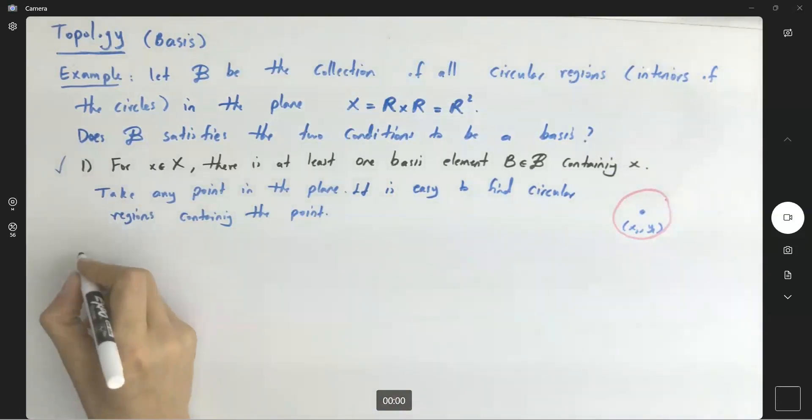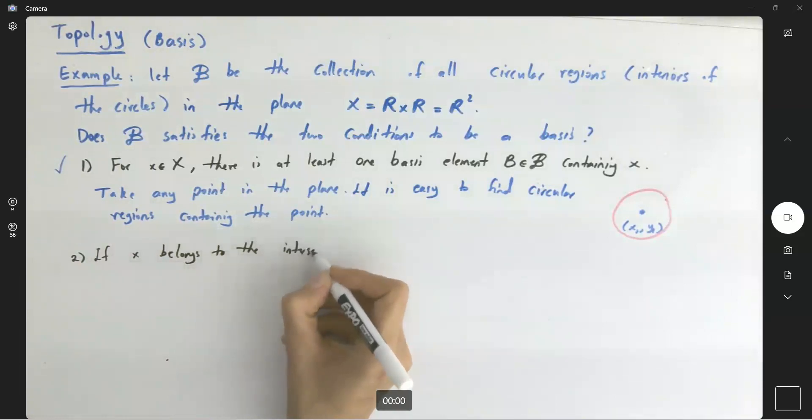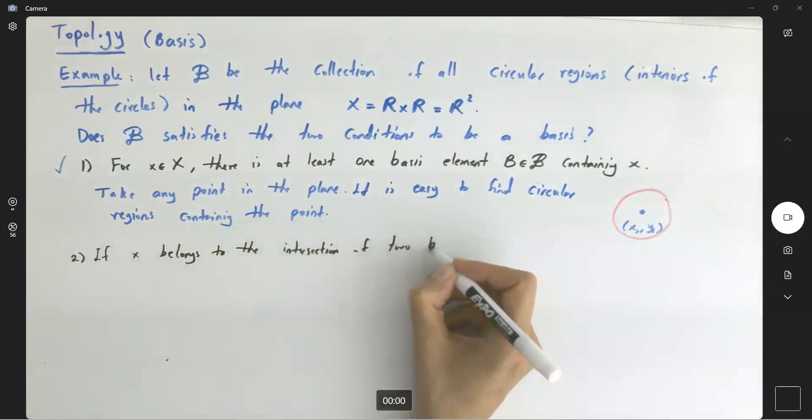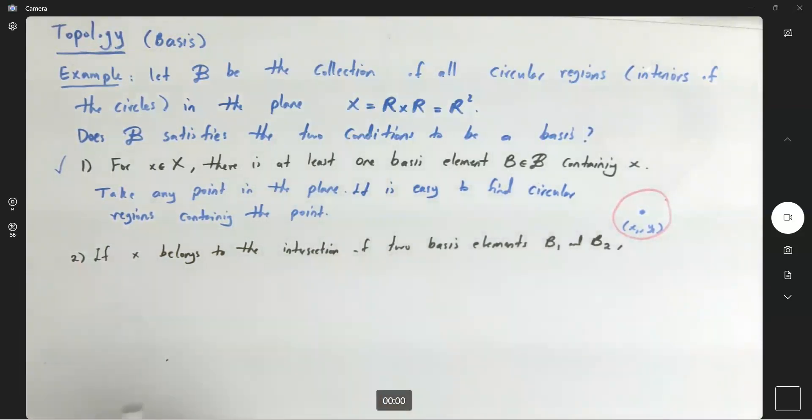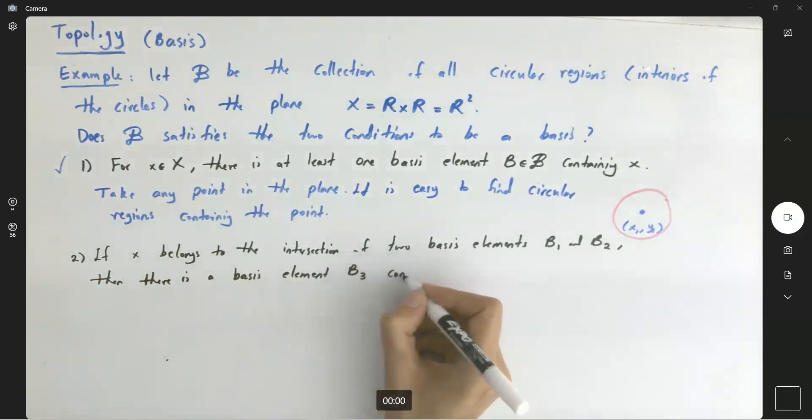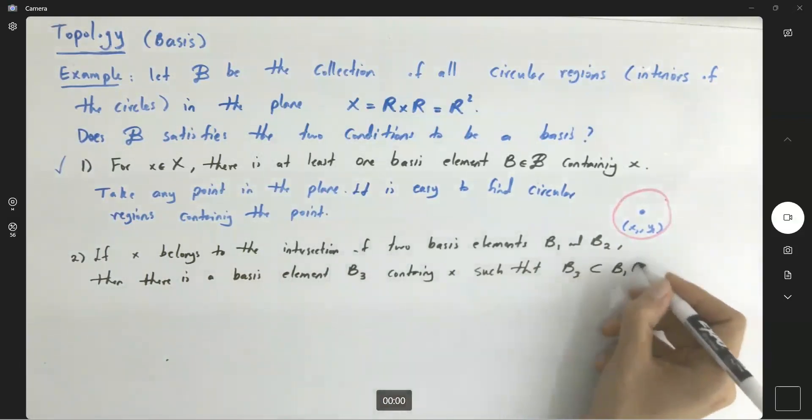What about the second condition? The second condition says, if X belongs to the intersection of two basis elements, like B1 and B2, then there is another basis element, like B sub 3 containing X, such that B sub 3 is included in the intersection of B1 and B2.